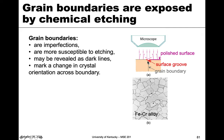We get a little surface groove because the etchant is dissolving and reacting more at the boundary where everything is more loosely packed. When we look through the microscope — with light waves coming in and reflecting back — what happens at this surface groove is that those light waves get scattered. Because they're scattered, you don't see that light returning, so grain boundaries are revealed as dark lines. You see a light region surrounded by dark lines where the light is getting scattered in the surface groove.